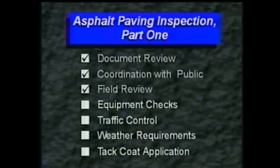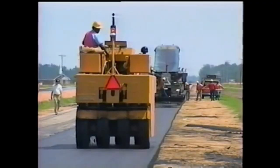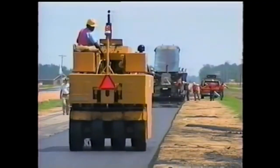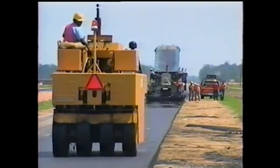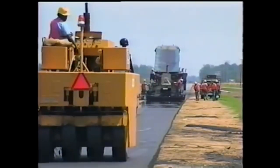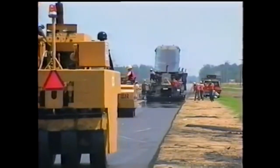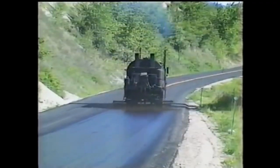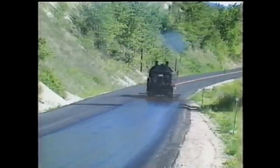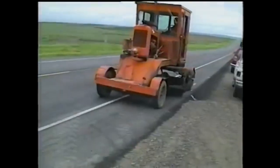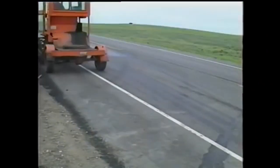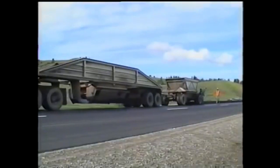Once the surface is properly prepared, your next preliminary responsibility is to check the paving equipment. First, get familiar with the equipment that will be used. The paving train consists of haul trucks, a paver, and two or more rollers. A distributor applies the tack coat to bond the pavement to the underlying surface. A power broom sweeps off the surface ahead of the tack application. Now let's take a closer look at each, beginning with haul trucks.